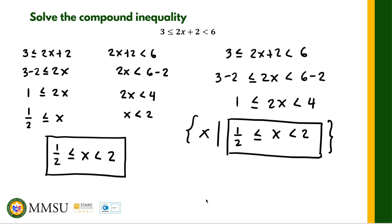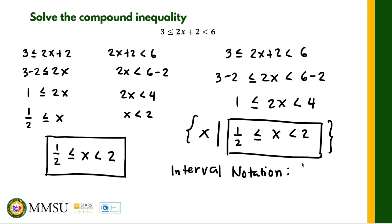For the interval notation, we start from one half, which is included, and end at 2, which is not included. Therefore, we write a bracket before one half, a comma, then 2, followed by a parenthesis — giving us [1/2, 2).